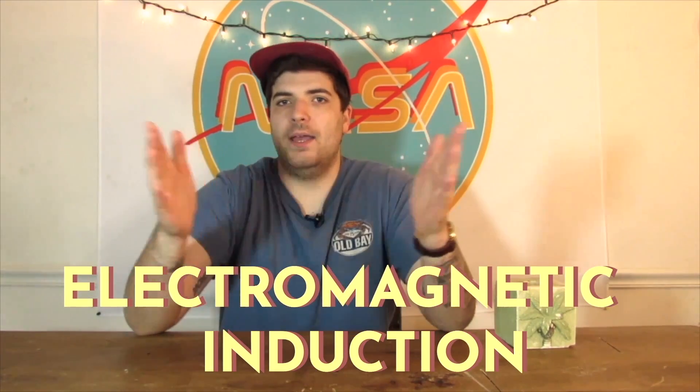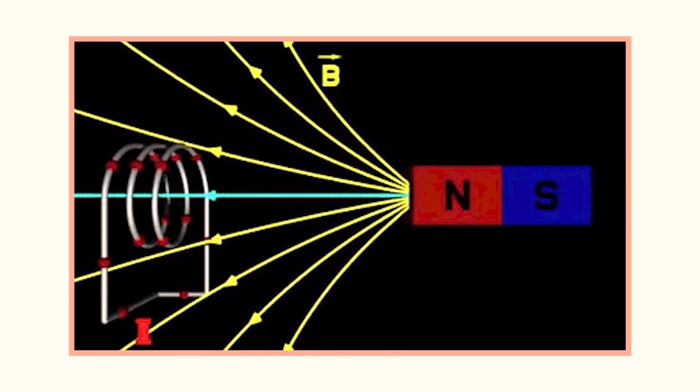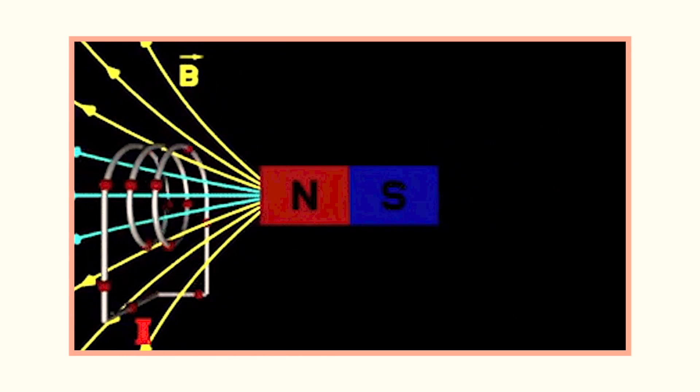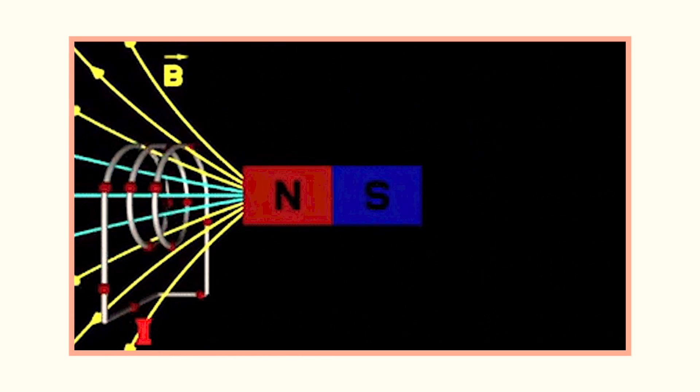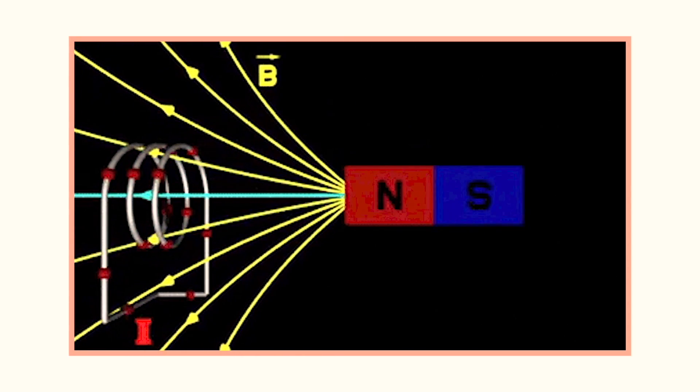So let's zoom into the how. How does the transformer take an AC waveform and alter its voltage? Transformers operate on what's known as electromagnetic induction — the production of an electromotive force, also known as voltage, across an electrical conductor in a changing magnetic field.